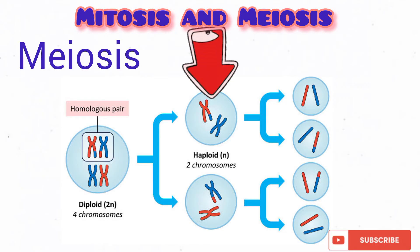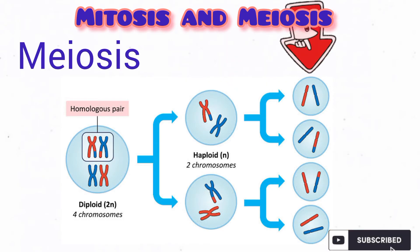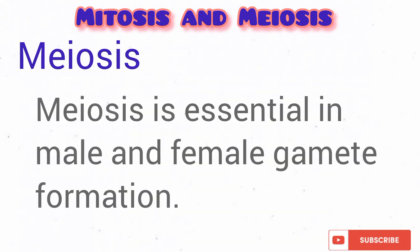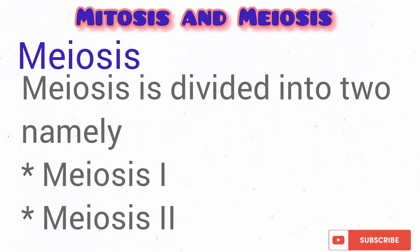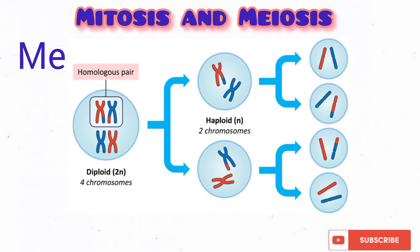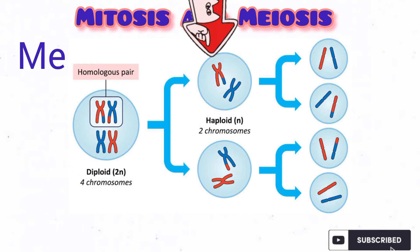These daughter cells also undergo meiosis 2 to form four daughter cells, as shown in the diagram. This kind of cell division is essential in males, females, flowering plants, and other organisms undergoing sexual reproduction where they produce gametes. Meiosis is divided into meiosis 1 and meiosis 2. Meiosis 1 is regarded as reductional division because the diploid chromosome number is reduced to haploid, while meiosis 2 is regarded as equational division.